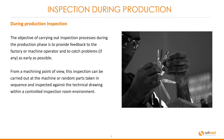During production inspection, the objective of carrying out inspection processes during the production phase is to provide feedback to the factory or machine operator and to catch problems as early as possible. From a machining point of view, this inspection can be carried out at the machine or with random parts taken in sequence and inspected against the technical drawing within a controlled inspection room environment.